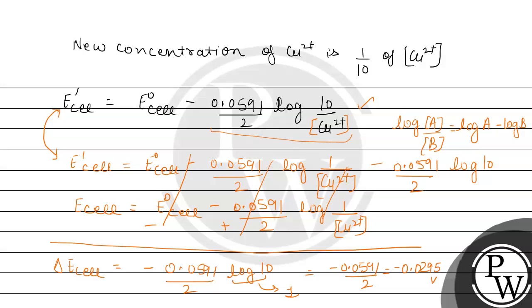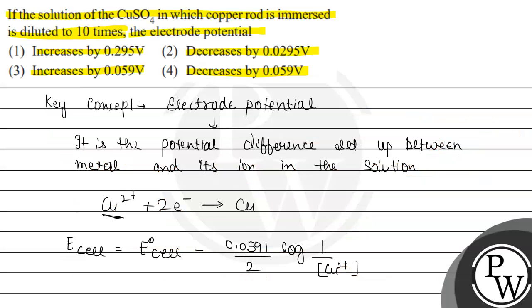From here we can see negative, it means decrease. The electrode potential will be decreased by 0.0295, and our final answer is option 2. Option 2 decreases by 0.0295 volt. Let us mark option 2nd as the correct response, and options 1st, 3rd, and 4th are incorrect. Hope you understood it well, best of luck.